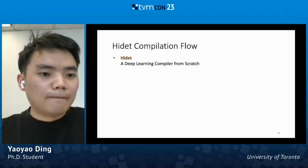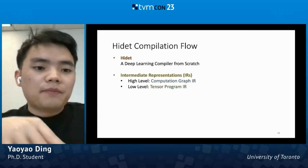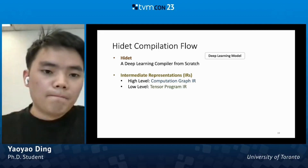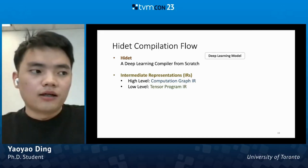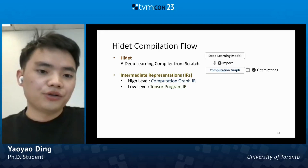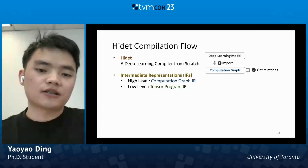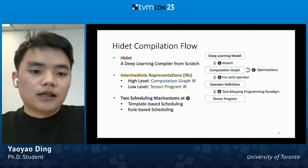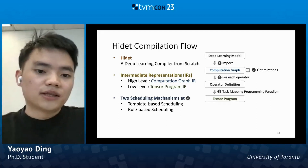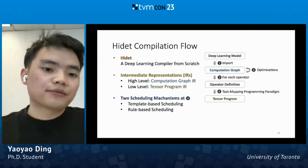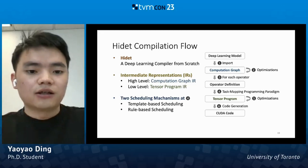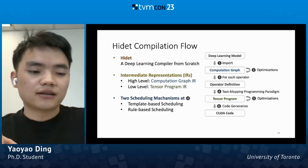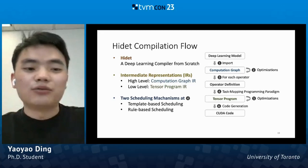Let's look at the compilation flow of HiDet. We mainly implemented HiDet in Python from scratch. There are two IRs: a computation graph IR and a tensor program IR. For a given model — for example, an ONNX model or PyTorch model — we import it into our computation graph IR and do some graph-level optimizations such as pattern-based fusion or operator rewrite. Then we dispatch each operator to our scheduling system, use the task mapping programming paradigm to schedule it into a tensor program, apply some optimizations, and generate code to the target platform. We implement two scheduling mechanisms: template-based and rule-based. Our rule-based is simplified and will not tune, but the template-based scheduling can tune for complex operators.